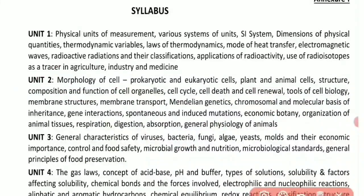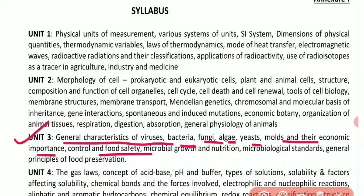Unit 3 covers general characteristics of viruses, bacteria, fungi, algae, yeast, and molds, their economic importance, control and food safety, microbial growth and nutrition, microbiological standards, and general principles of food preservation.